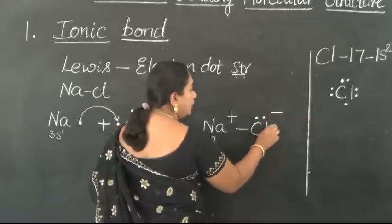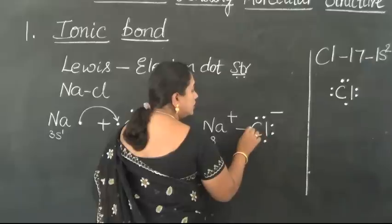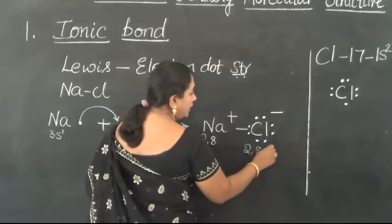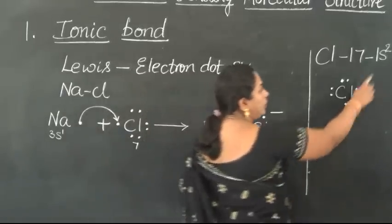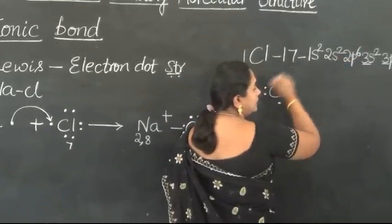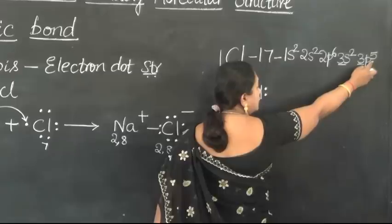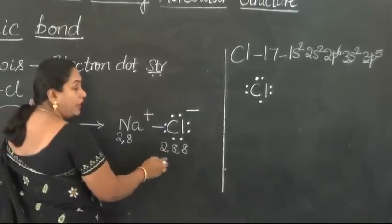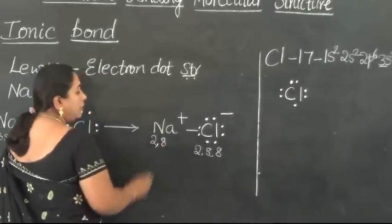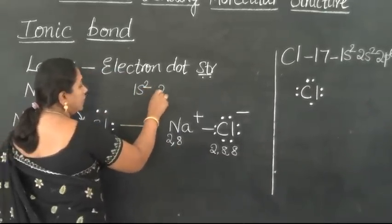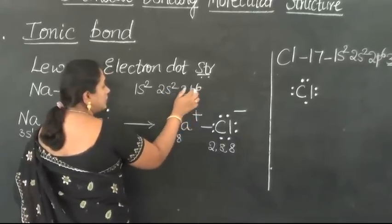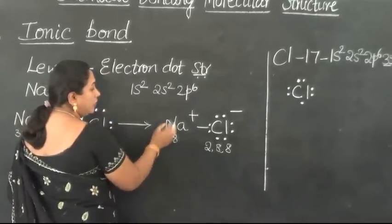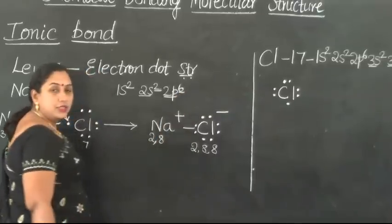After the transfer, sodium's electronic configuration becomes 1s2, 2s2, 2p6 — simplified as 2, 8 — fulfilling the octet. Chloride's electronic configuration becomes 1s2, 2s2, 2p6, 3s2, 3p6 — simplified as 2, 8, 8 — also a fully filled octet structure. Both participating atoms have thus gained the stable octet configuration through this ionic bond formation.